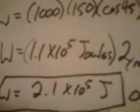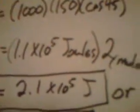just plugging in the values. So we get work equals 1,000 newtons times 150 meters, and then take cosine of 45 degrees, and we get 1.1 times 10 to the fifth joules times 2.